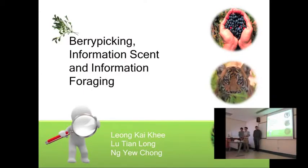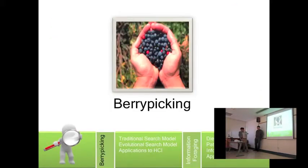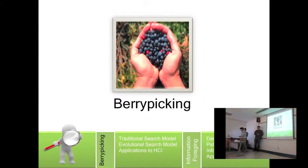Berry Picking is a new model of searching in online information systems. The person who came up with this new model is Marcia Bates. The reason why she came up with this model is because she believes that the traditional model of information retrieval does not best represent the actual behaviour of how a user searches online.